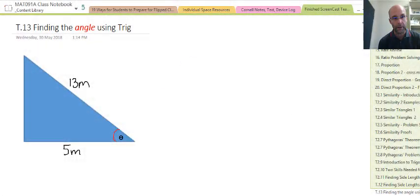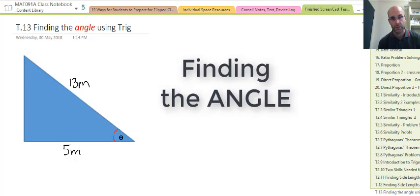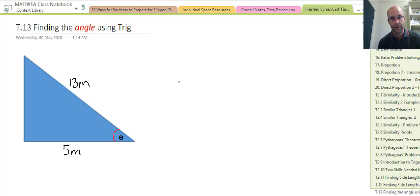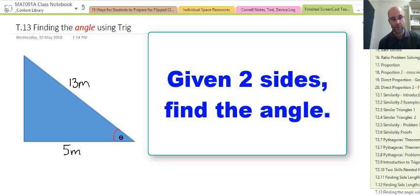We're learning how to find the angle in a right angle triangle using trig. To be successful, you need to be able to demonstrate questions where a given triangle has given sides but you have to find an unknown angle.